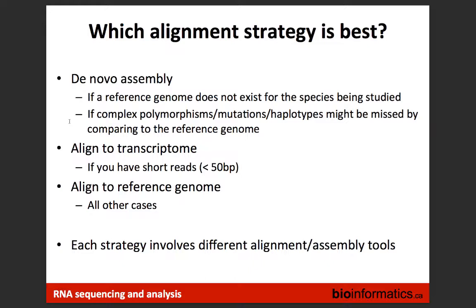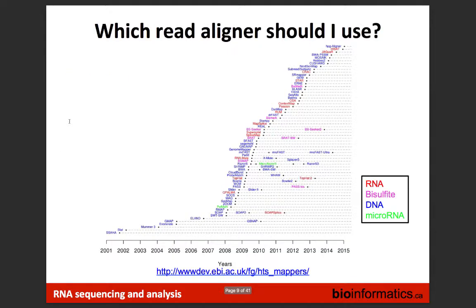If you align to spliced cDNA sequences, you could do that, but the main disadvantage is you become completely dependent on the known set of transcripts — you can't discover novel splice junctions.